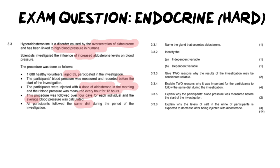So there's a lot of pieces to unpack here. First of all we're talking about a disorder. We're also talking about using people and altering their natural levels of aldosterone. And so let's go into the questions and see how the information in the paragraph is going to make it easier to answer these questions. Starting off with the first question. 3.3.1 says name the gland that secretes aldosterone. So we're going in with a nice easy question right at the beginning. The gland is going to be the adrenal gland.